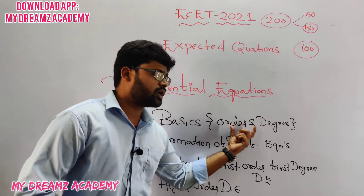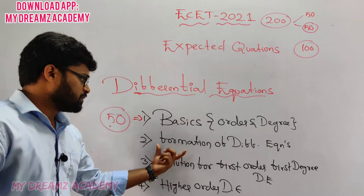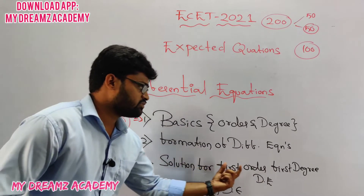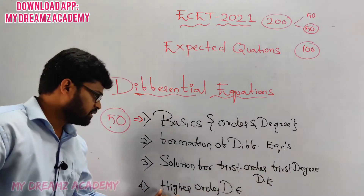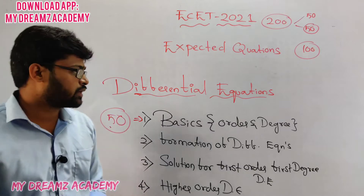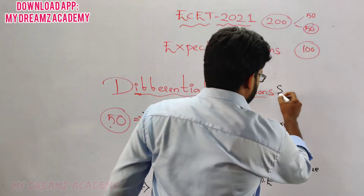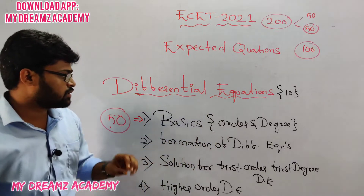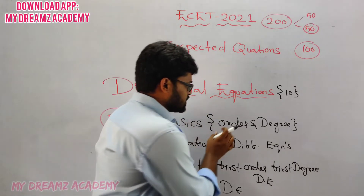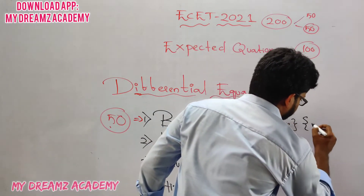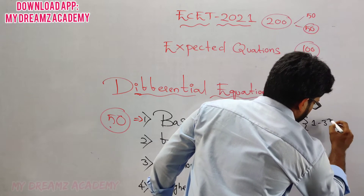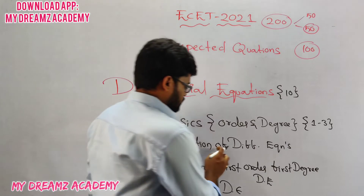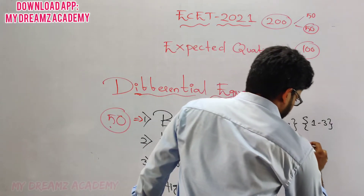In basics, we are going to learn order and degree of a differential equation. Next is formation of differential equations. Then solution for first order and first degree differential equation. Then higher order differential equation. You will get 10 marks total from differential equations. From basics — that is order and degree — you will get 1 to 3 marks.